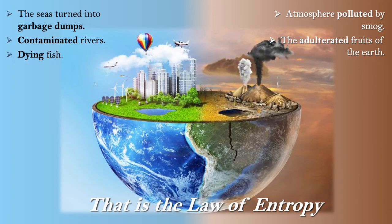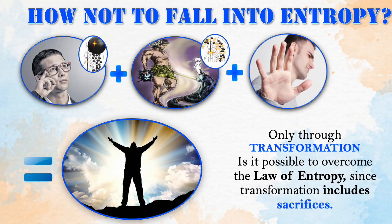The law of entropy is found in everything — the seas turned into garbage dumps, the rivers polluted, the fish dying, the atmosphere contaminated by smog, the adulterated fruits of the earth. All humanity is going down that path. So, how are we going to avoid falling further into entropy? How are we going to overcome this resistance and advance our level of inner work in higher octaves? Only through transformation is it possible to overcome entropy, and we achieve transformation when we are willing to sacrifice our egoic desires, which are the ones that always put us in entropy.